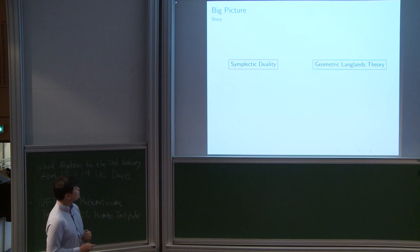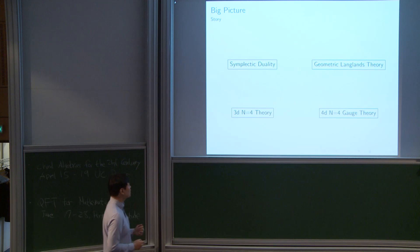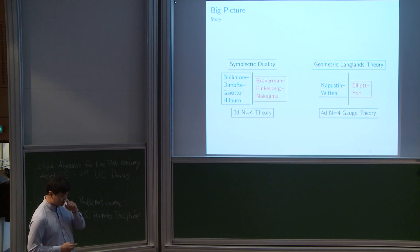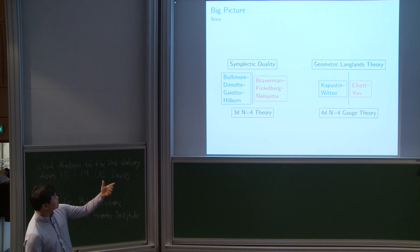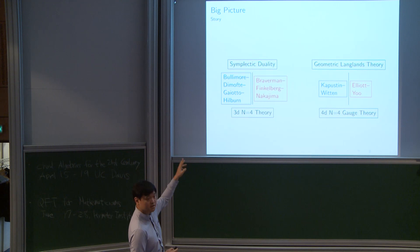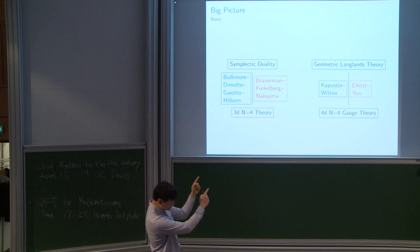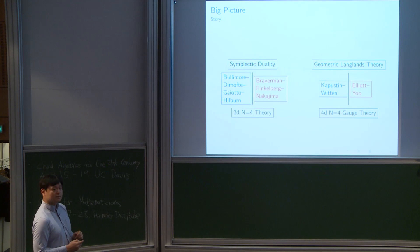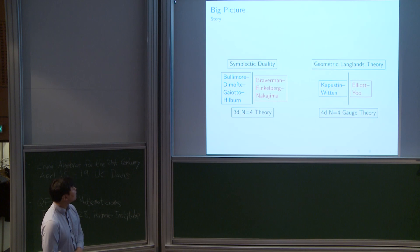The first idea is to use physics — specifically 3D N=4 theory and 4D N=4 gauge theory. There have been some works relating these subjects. The blue ones are mostly physics work and the red ones are mathematical. The blue works find relations between these two different-looking subjects using physical ideas, and the red ones give a mathematical way to understand these physical objects — and they found things the physicists didn't realize.